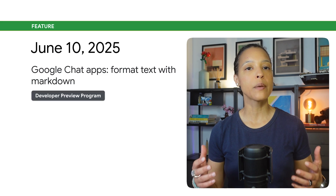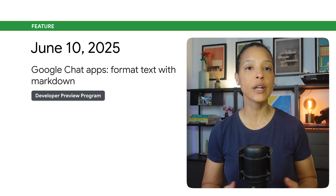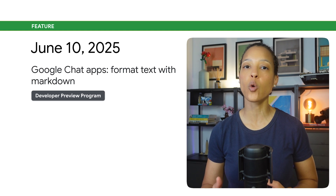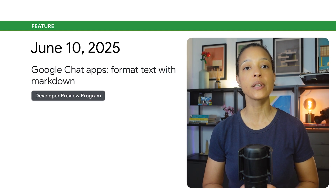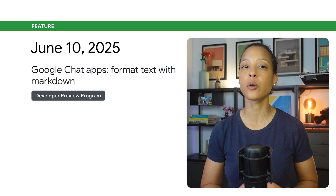Google Chat apps can now format text with Markdown, including lists and code blocks. These new capabilities are available through the Developer Preview Program.